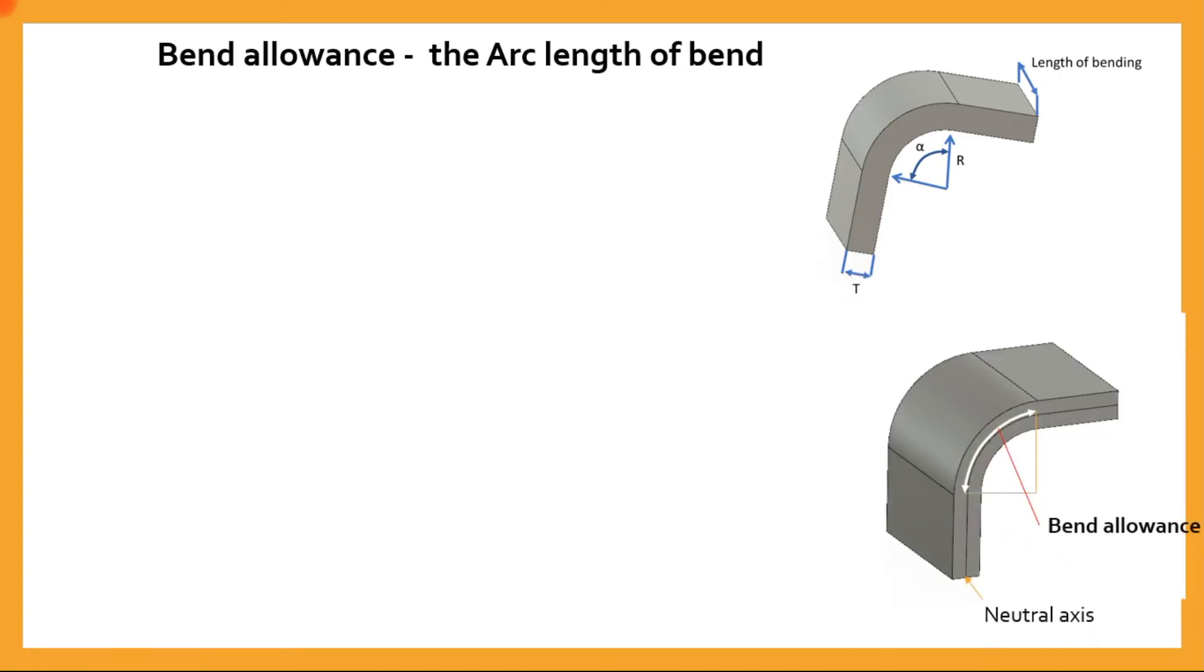So the formula is: bend allowance LB is equal to alpha into R plus KT. Here, LB is the bend allowance, alpha is the bend angle, R is the bend radius, T is the thickness, and K is a factor which generally varies from 0.33 to 0.5.